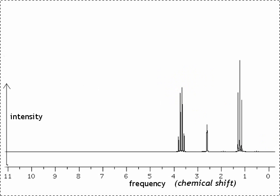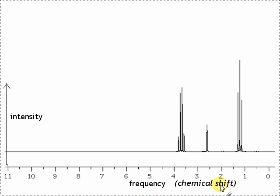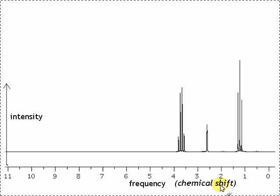So, as a result of this, we get a spectrum which shows the intensity of the emissions versus the frequency or the chemical shift, as it's called. Now, the different protons within the molecule will emit energy at slightly different frequencies if they are in different electronic environments.